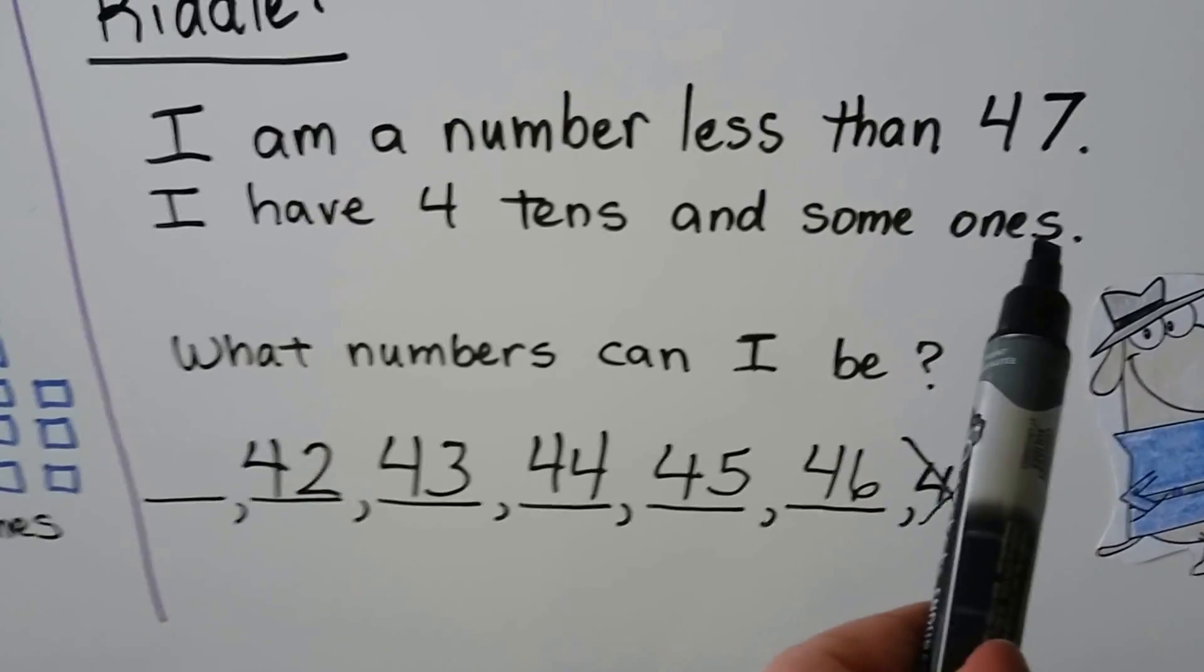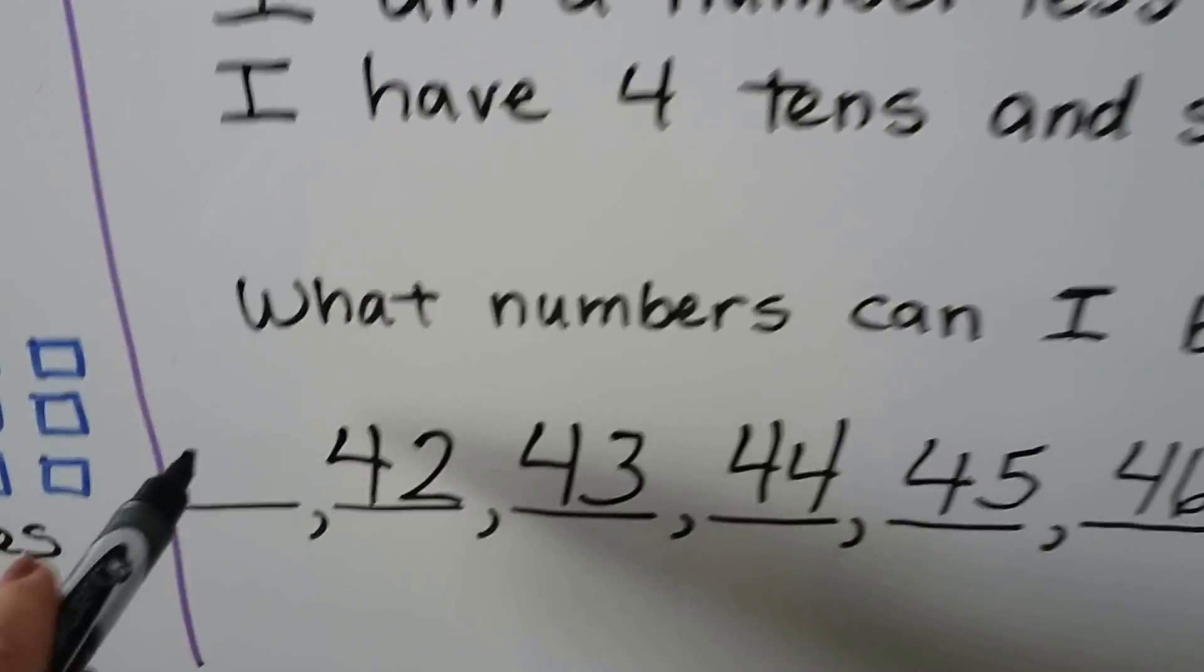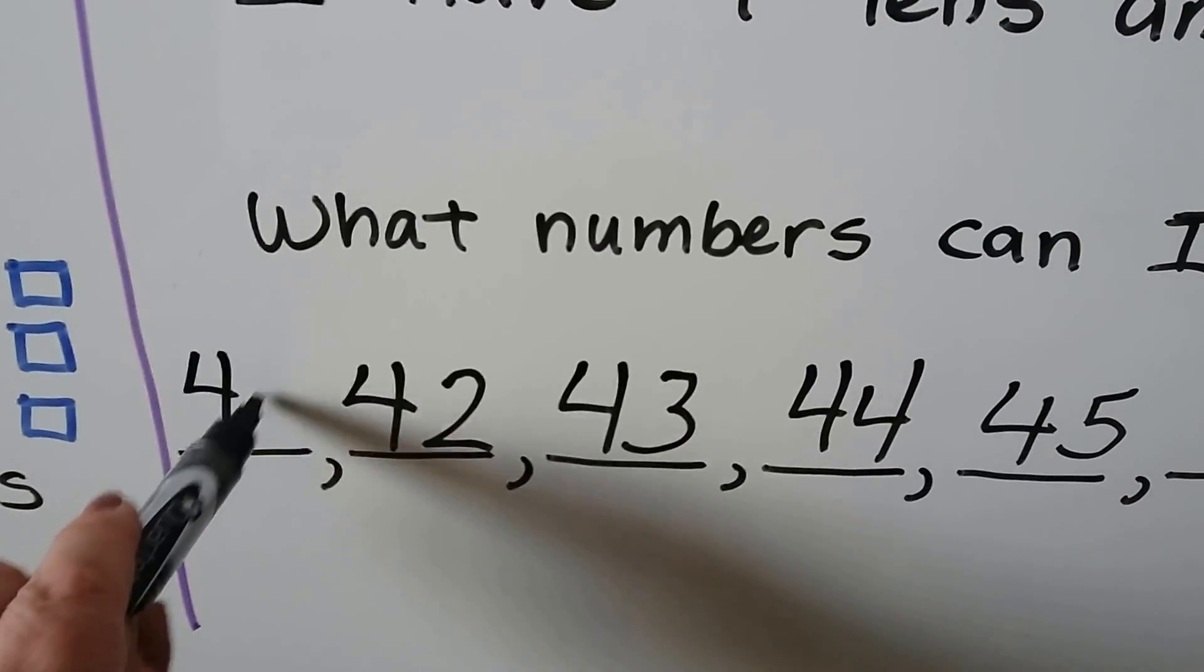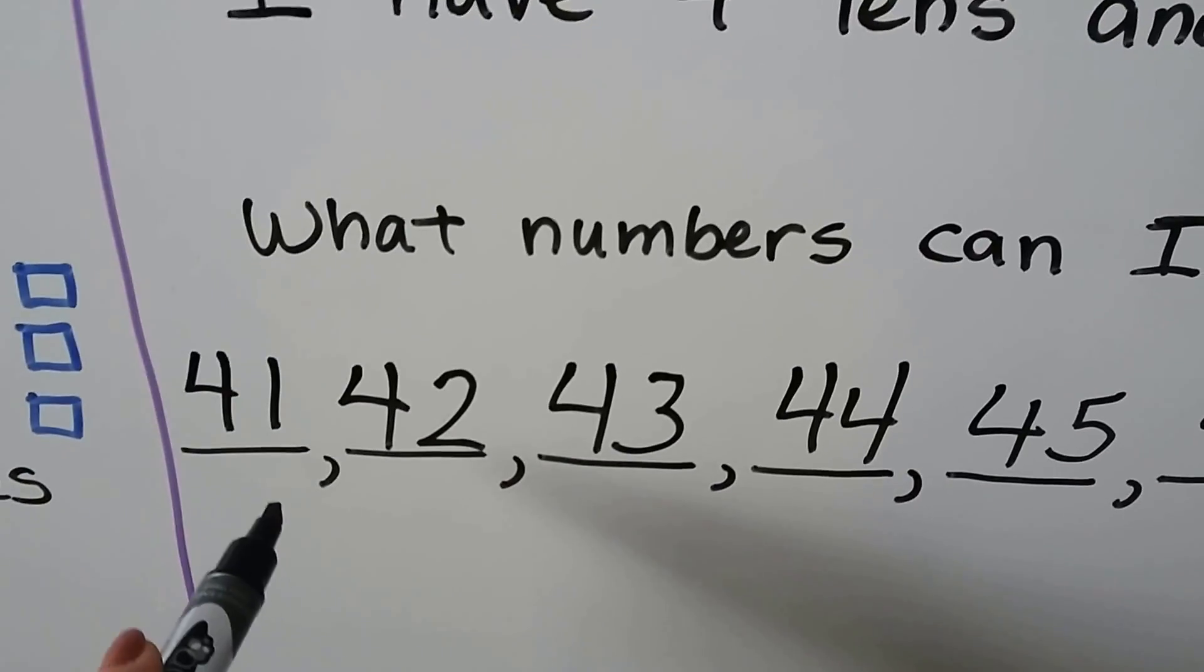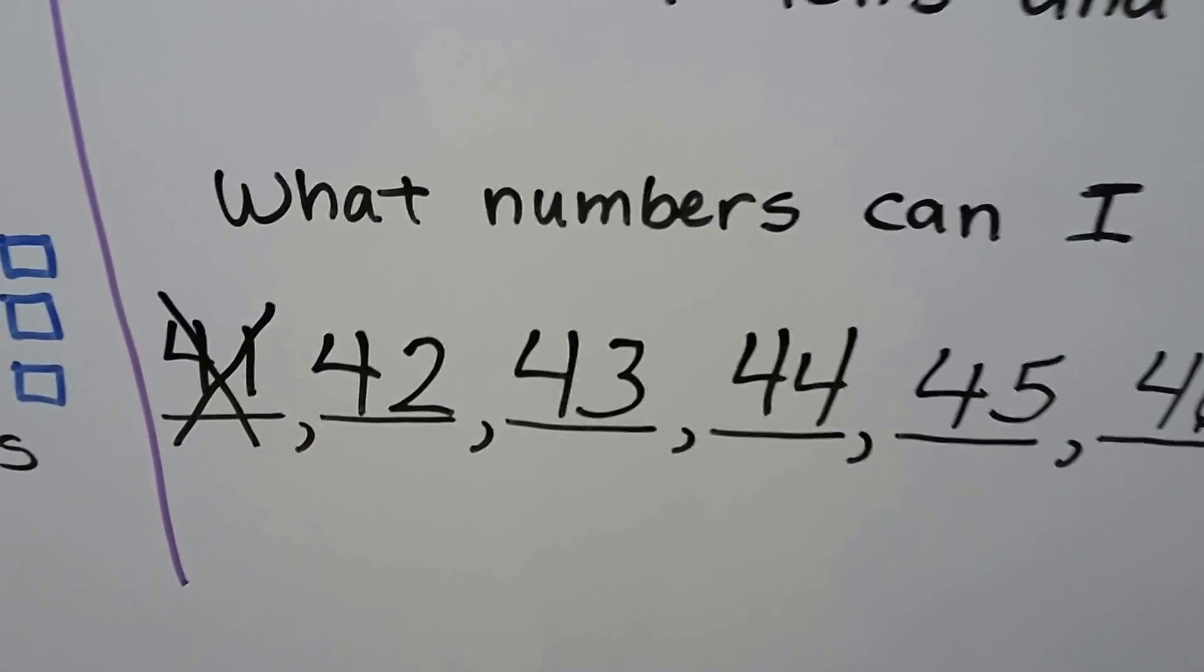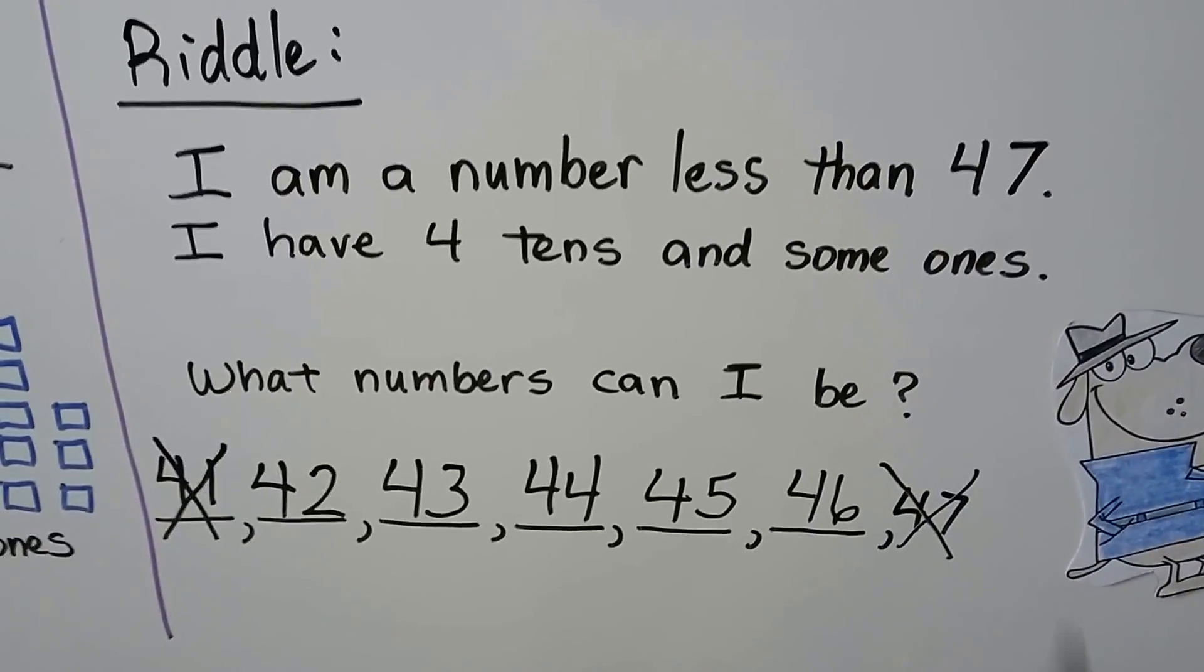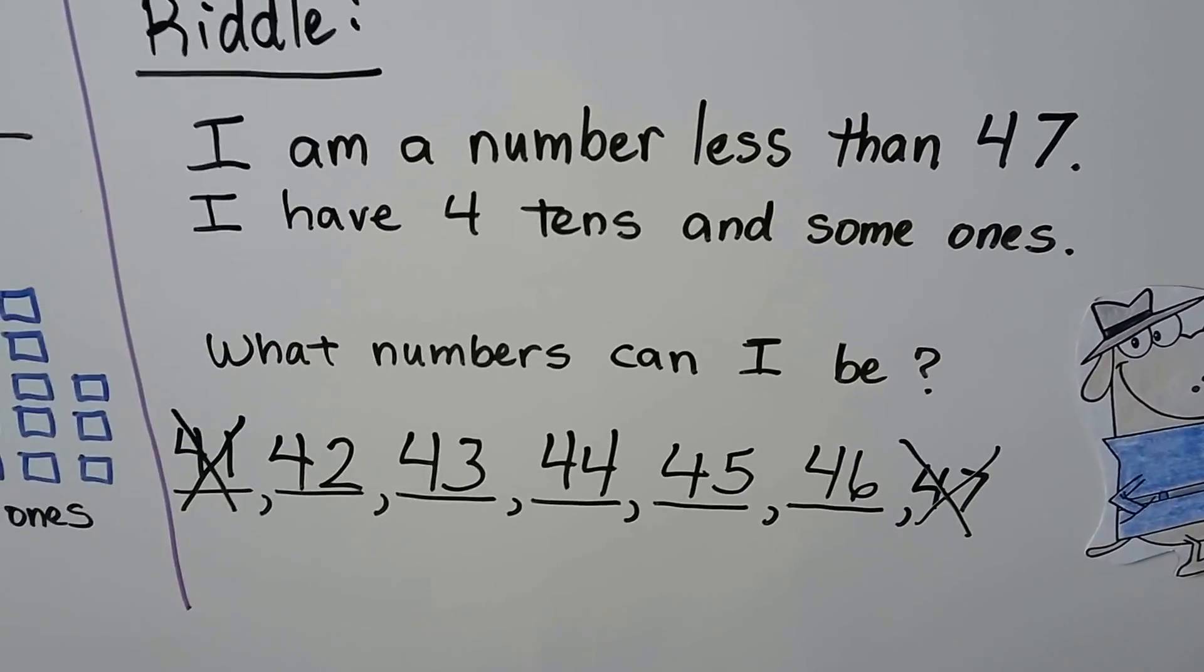See how the ones has an S at the end? So if we wrote 41 here, that means it only has one one. It said it has some ones, more than one. So this one can't count. It only has one one, and it's supposed to have some ones. So what numbers can I be?